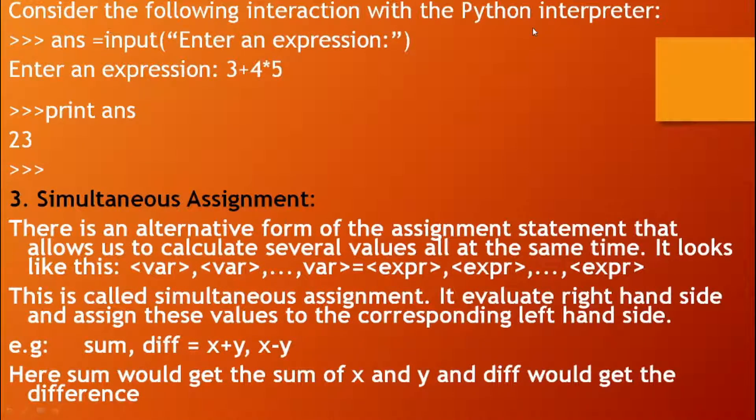See the example. Consider the following interaction with the Python interpreter. The input statement says enter an expression. Then the expression value evaluated from this is initialized to ANS, answer. After this, it allows the user to enter an expression. The user enters 3 plus 4 times 5, and after the print statement we are getting the output. ANS is initialized to 23.